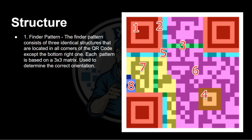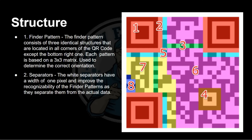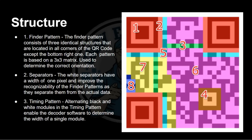Number one is the finder pattern — those three squares: one in the top-left, one in the top-right, one in the bottom-left. There isn't a fourth because three squares allow you to determine orientation, telling you which way is up, down, left, and right on the QR code. These are a three-by-three matrix surrounded by a border. Number two is the separator — a white border around those squares so the finder pattern isn't mixed up with the actual data.